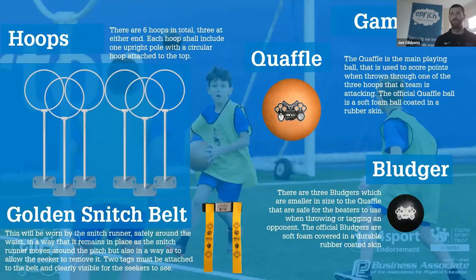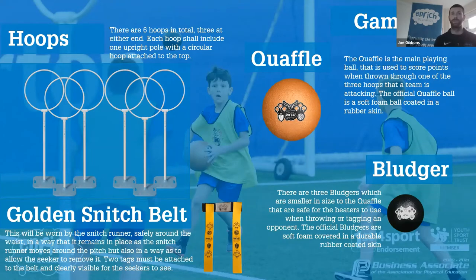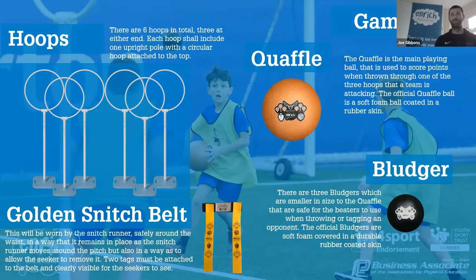The bludgers are smaller, lighter, easier to throw, and have a double-skin durable rubber coating so they don't hurt when they hit people. On the pitch there is one quaffle and three bludgers, split between the two sides. You also have the golden snitch belt, worn safely around the waist by the snitch runner, with two tags attached at the back that are always clearly visible for children or adults to grab.